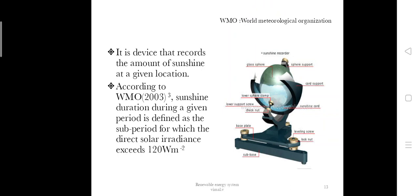According to the WMO (World Meteorological Organization), sunshine duration during a given period is defined as the sum of sub-periods for which direct solar irradiance exceeds 120 watts per meter squared. Thank you.